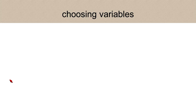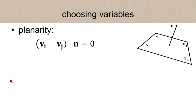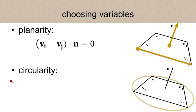In order to have simple constraints, we need to choose variables carefully. For planarity, we introduce face normals and require orthogonality of all edges with respect to corresponding face normals. We require such orthogonality for all face edges, which is actually overkill, but such redundancy helps us treat all vertices equally.